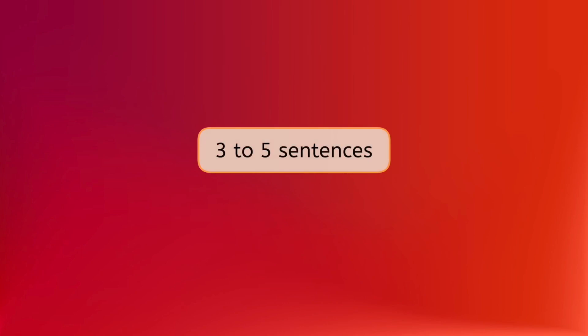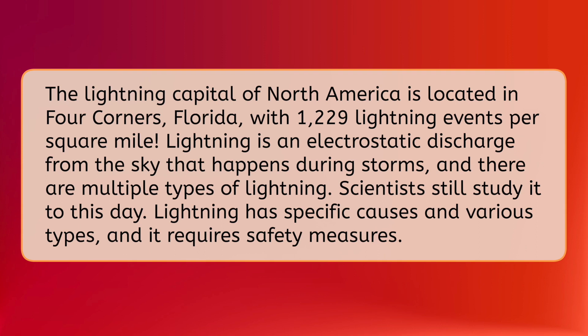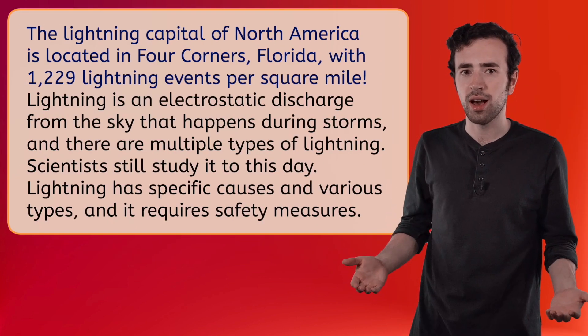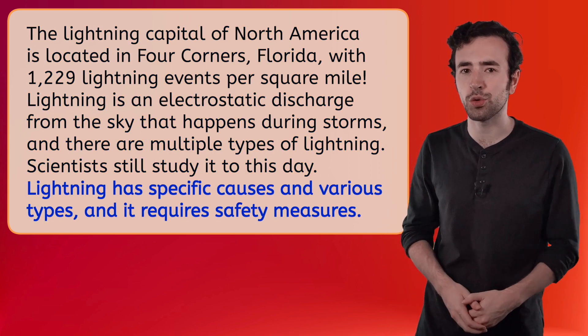When you put all three parts together, your introduction should be three to five sentences. Here's my full intro: The lightning capital of North America is located in Four Corners, Florida, with 1,229 lightning events per square mile. Lightning is an electrostatic discharge from the sky that happens during storms, and there are multiple types of lightning. Scientists still study it to this day. Lightning has specific causes and various types, and it requires safety measures. So there you have it — a hook to draw your reader in, background information to give them context, and a main idea to guide your essay.